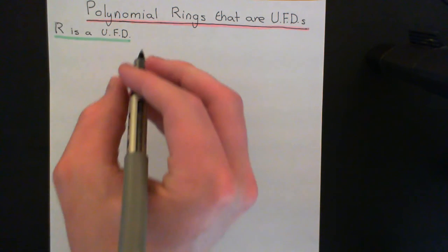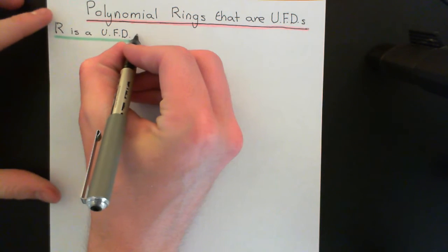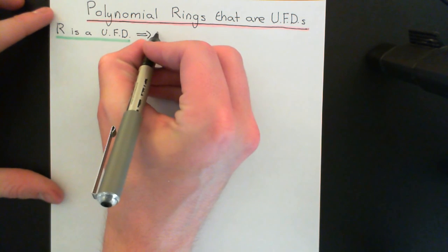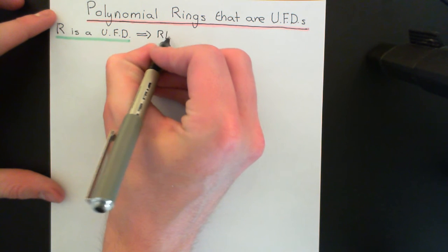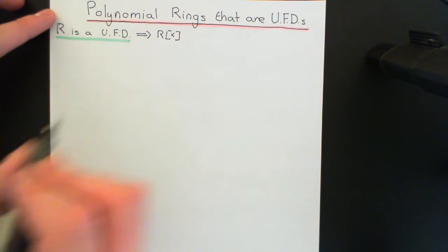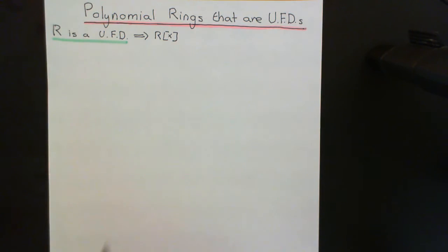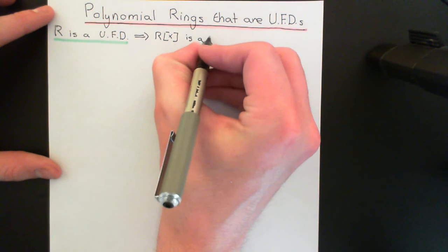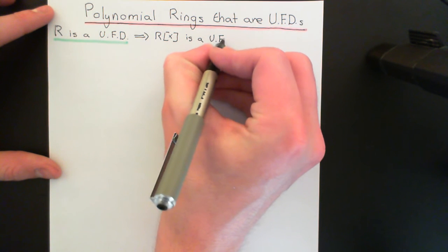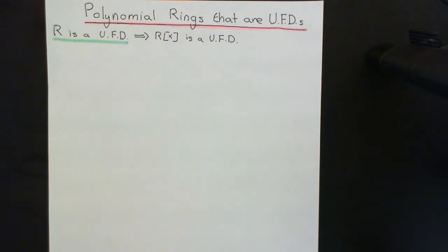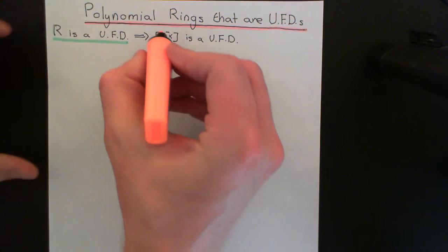So this is the big theorem: if R is a unique factorization domain, it implies that R adjoin X — the ring of polynomials with coefficients from the ring R — is also a unique factorization domain. This isn't completely trivial to prove, so we're going to dedicate a video to proving this theorem.